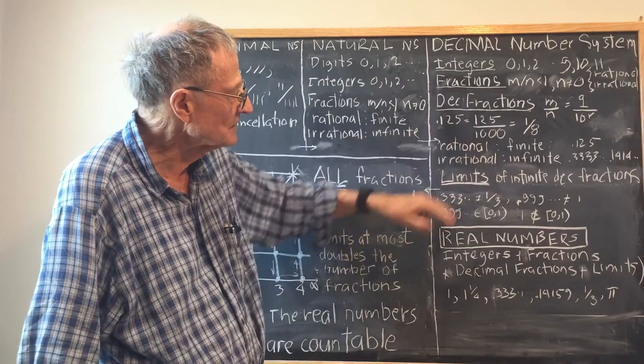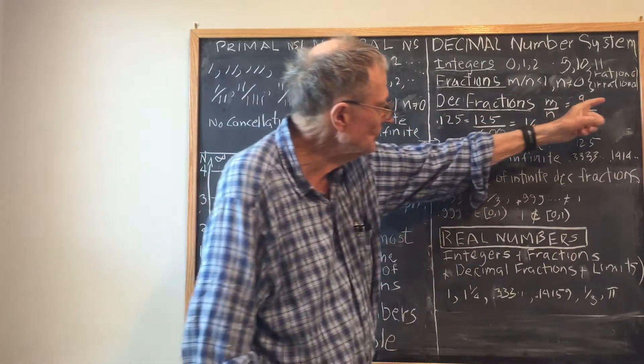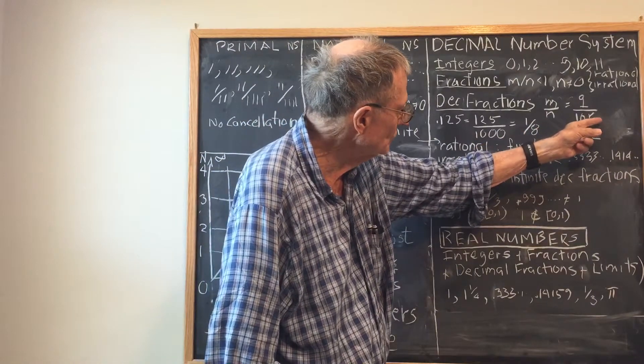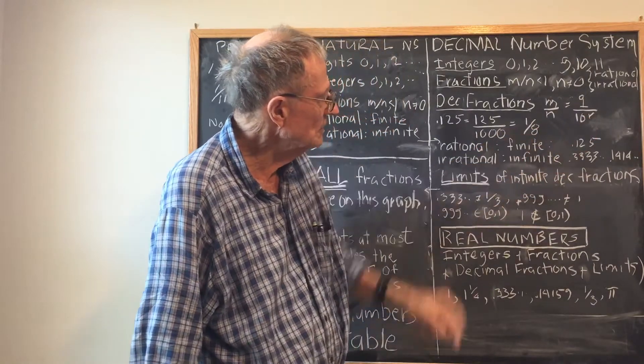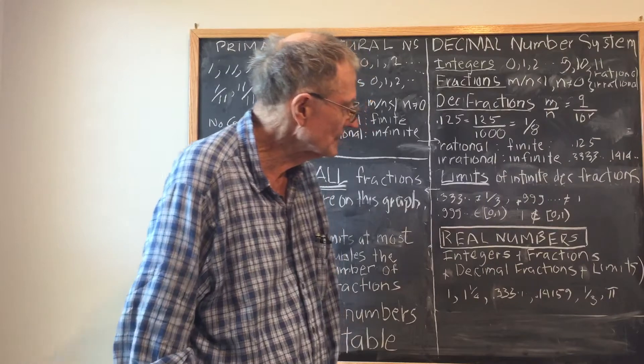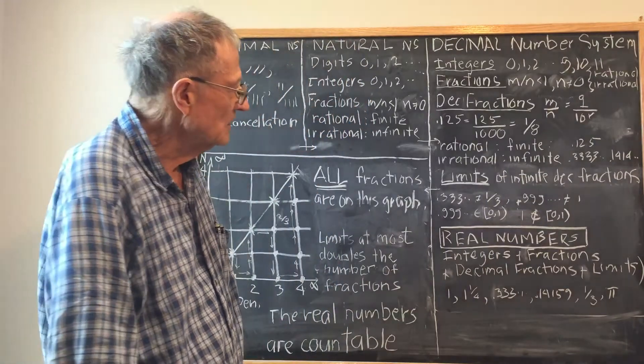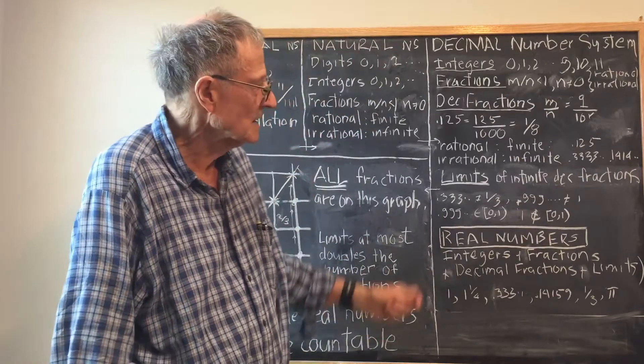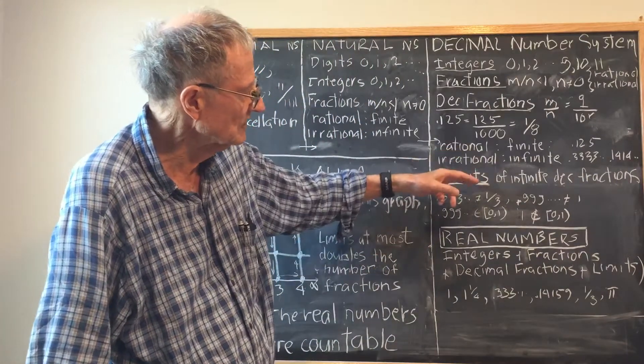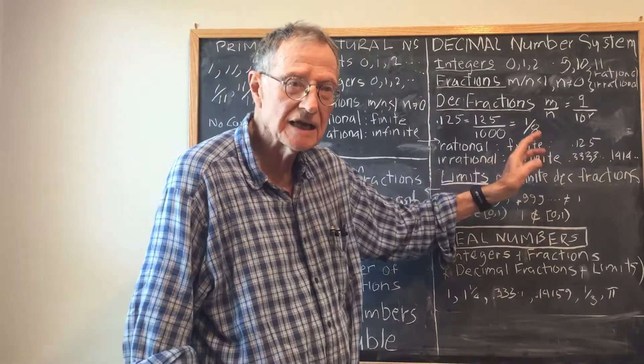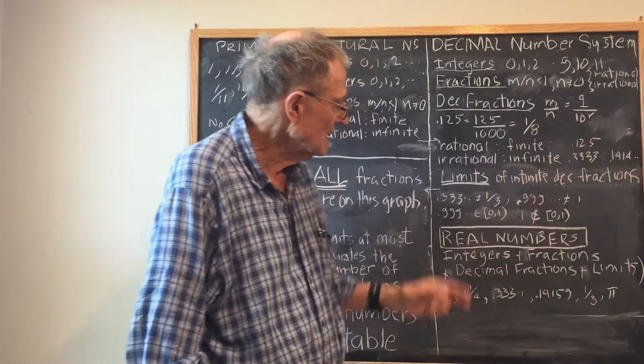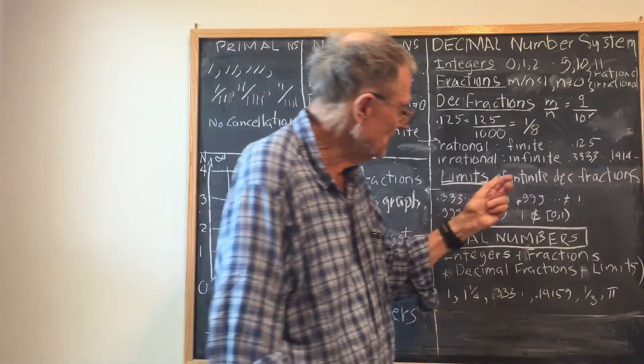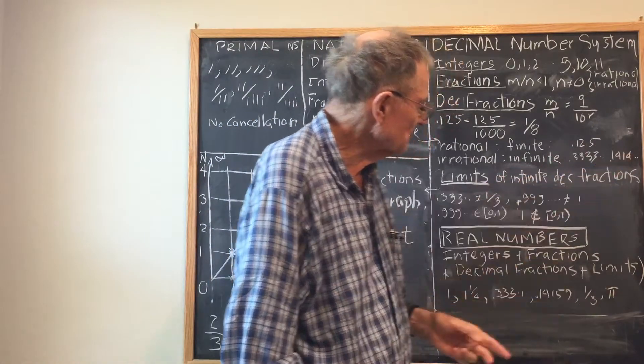For example, 0.125 is 125 over 1,000, which is 10 cubed, and that's equal to 1 eighth. We also have rational decimal fractions and irrational decimal fractions. The rational decimal fractions are finite with a finite number of digits, and the irrational decimal fractions are infinite with an infinite number of digits.